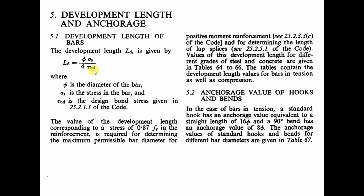As seen earlier, the factors affecting development length are reflected in this formula. φ is the diameter of the bar, σs is the stress in the bar, and τbd is the bond stress. Using this formula we calculate the development length.